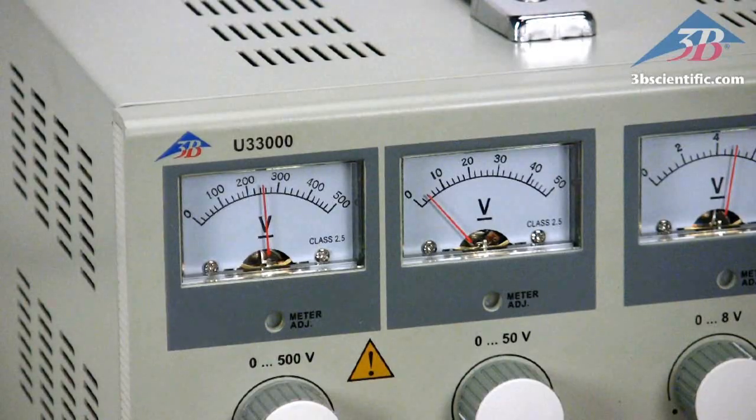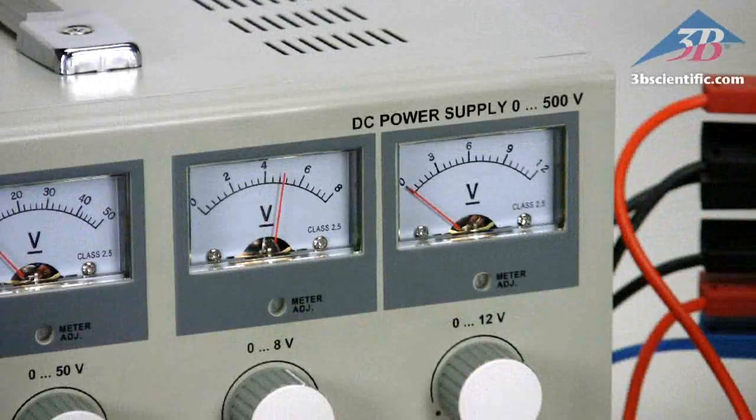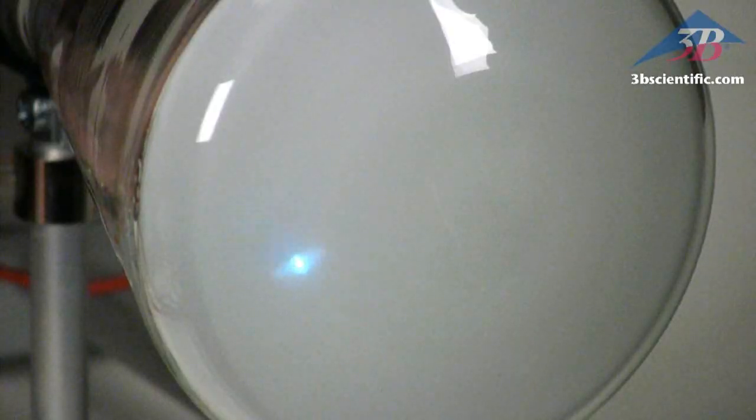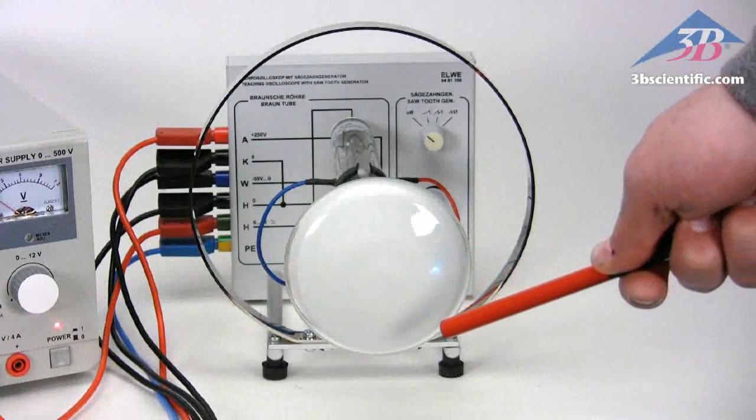The new DC power supply has four outputs and allows for a compact experiment setup. Use a bar magnet to move the beam and demonstrate the effect of a magnetic field on the electron beam.